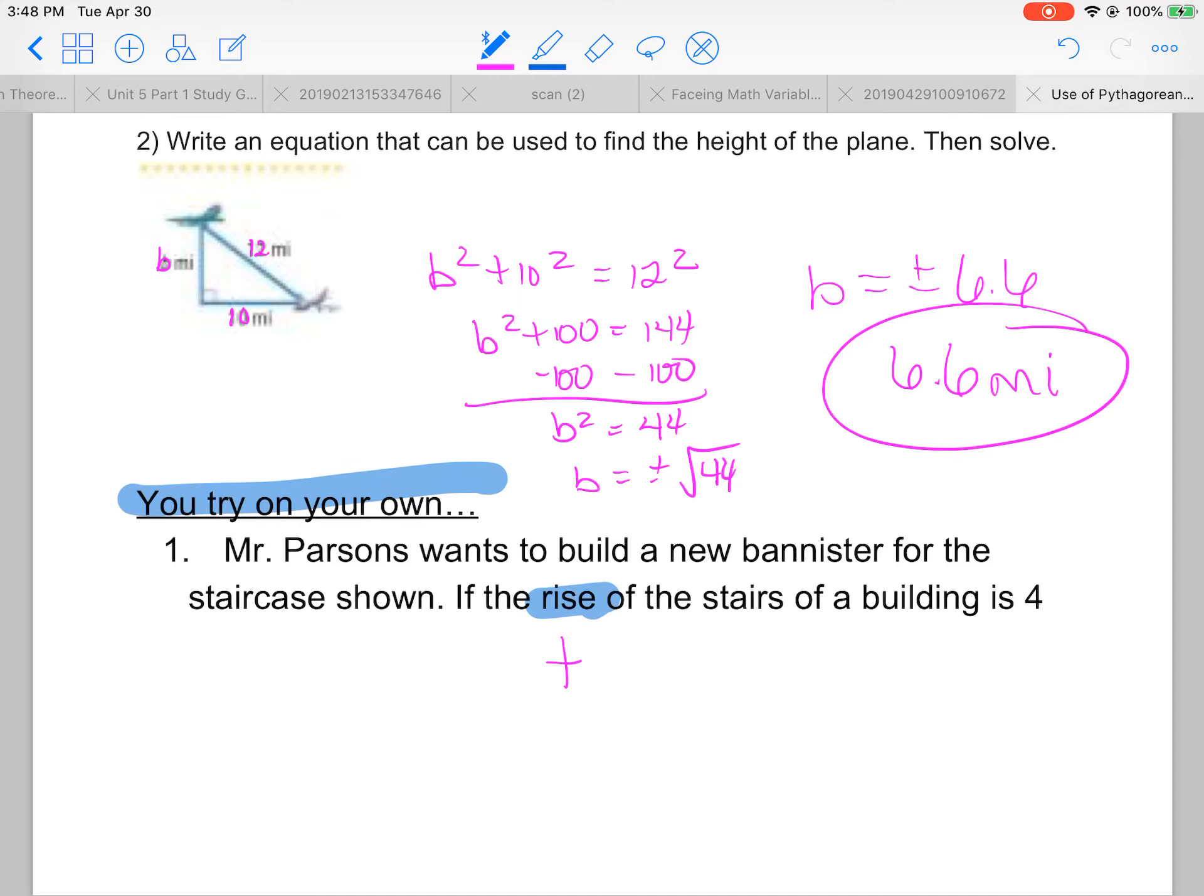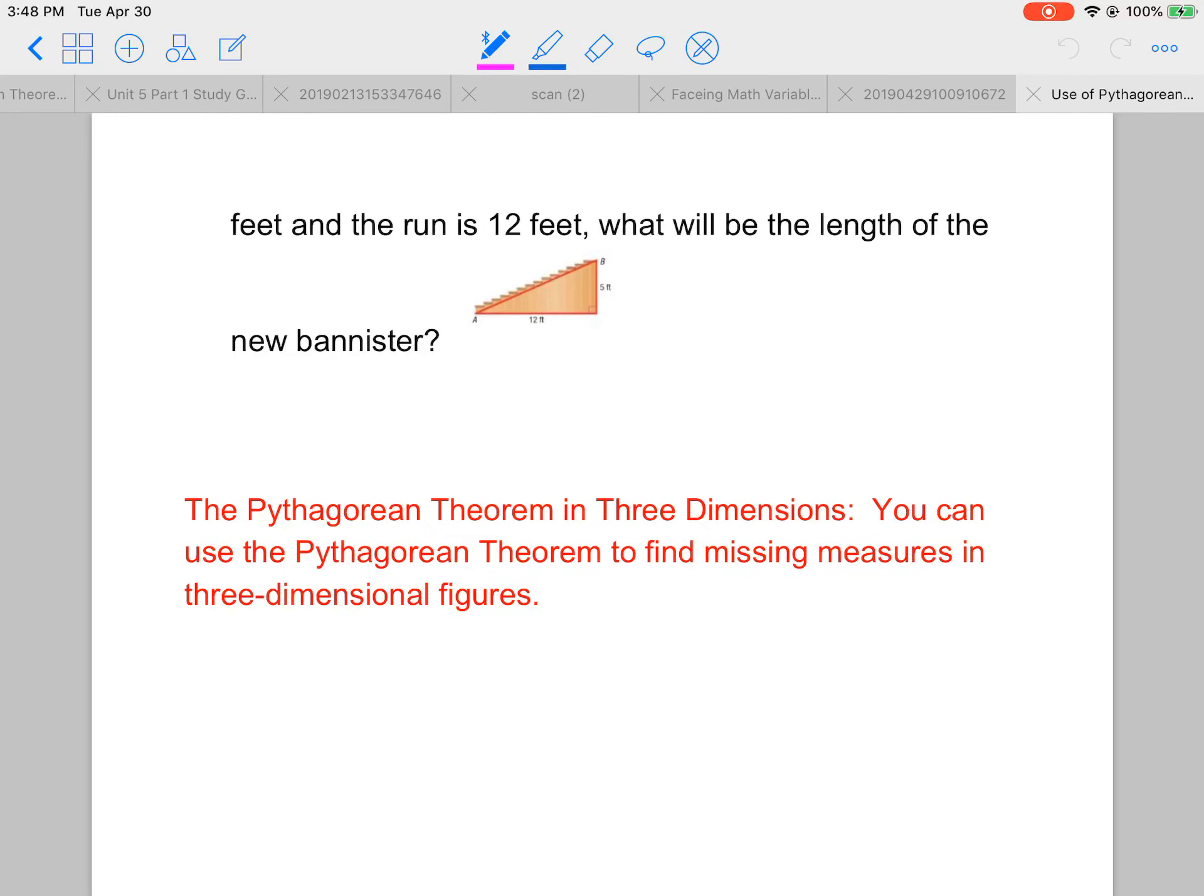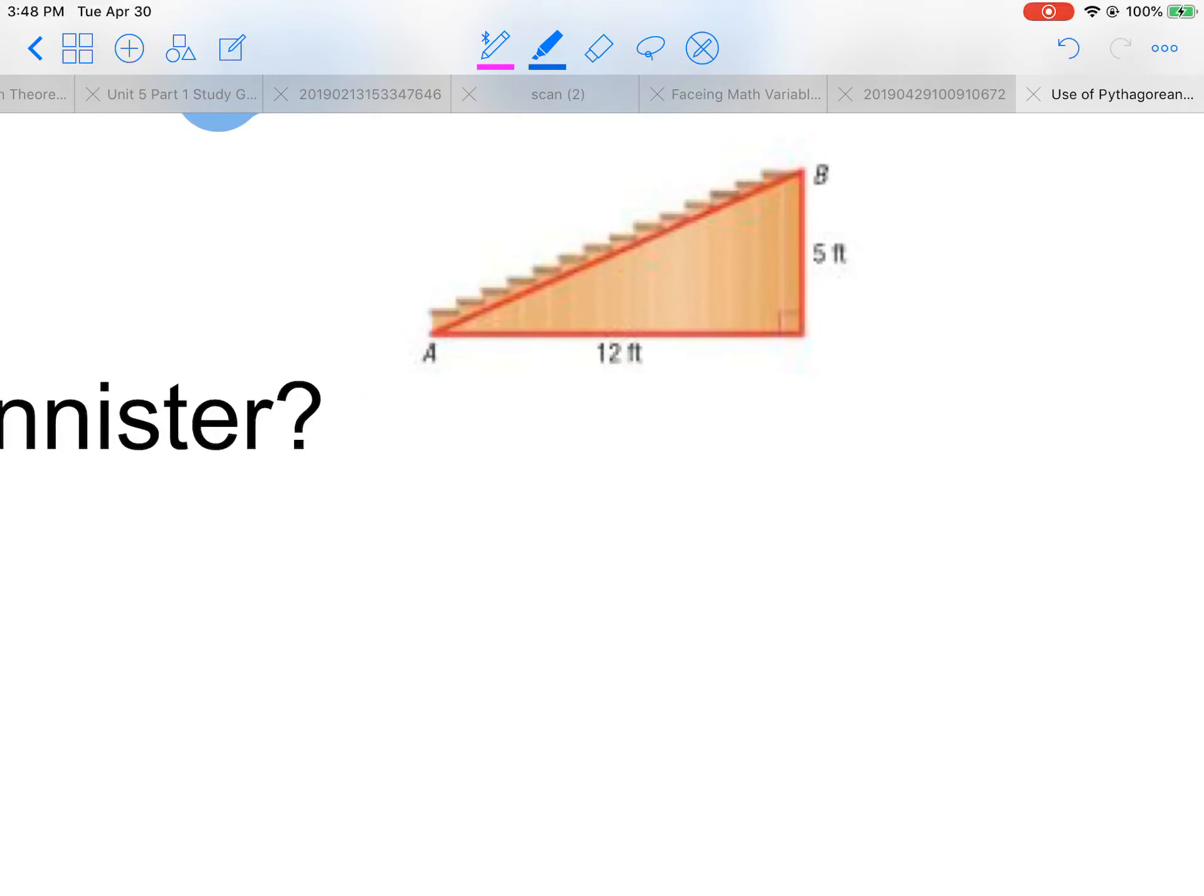Let's think of your x and y axis. Rise would be going up on the y axis, is 4 feet. And the run is 12 feet. That means your x or your going over left and right is 12 feet. What will be the length of the new banister?